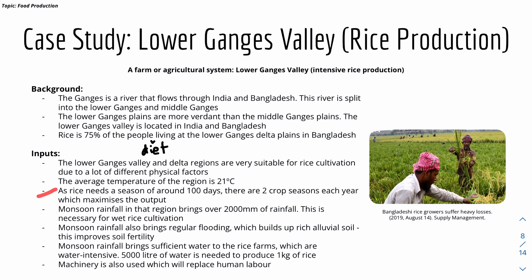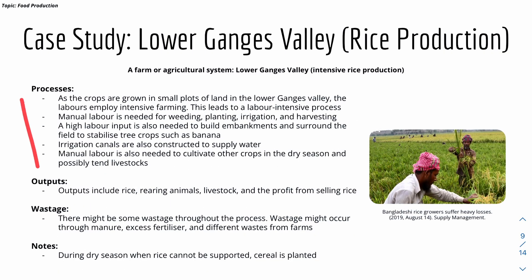The Lower Ganges Valley is very suitable for rice cultivation. Good temperature of around 21°C, and monsoon rainfall brings over 2,000 mm of rainfall — necessary for wet rice cultivation. As rice needs around 100 growing days, there are two crop seasons per year, maximizing output. The monsoon also brings regular flooding that builds up rich alluvial soil to improve fertility, while machinery is increasingly replacing human labor.